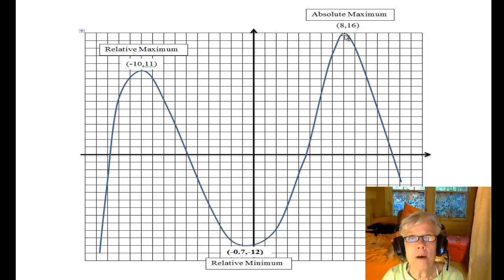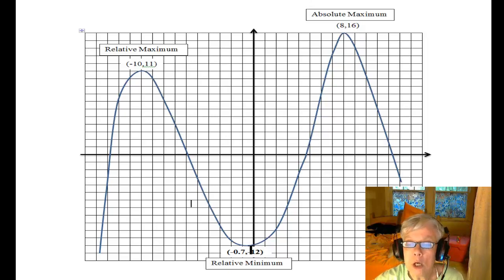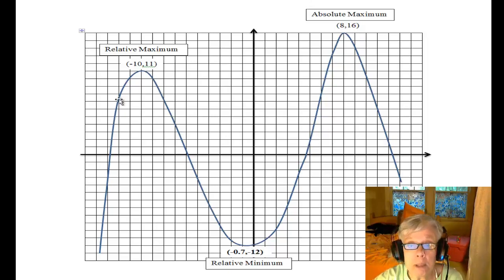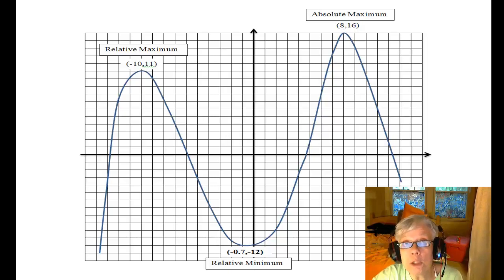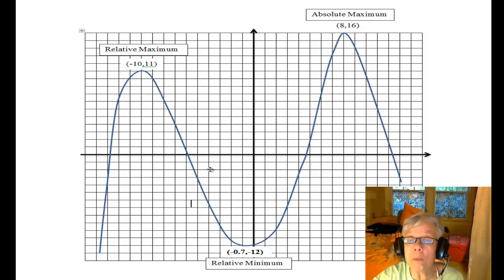Maxima is the plural of maximum. We have one relative minimum. We don't have an absolute minimum because the graph goes down forever on the left and forever on the right, and you'll always be able to find a point lower than whatever you would try to declare was the absolute minimum. So that won't work, but we do have a relative minimum right here.